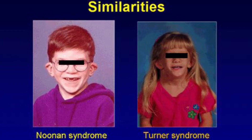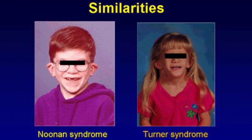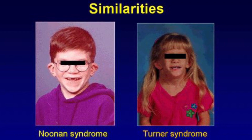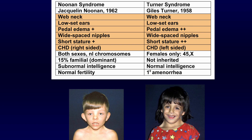There are phenotypical similarities between Noonan syndrome and Turner syndrome, and because of this we often confuse between both of them. Here is the comparison between Noonan syndrome and Turner syndrome — I recommend to stop the video here for 20 seconds. We can already see the similarities between both of these syndromes, such as webbed neck, low-set ears, pedal edema, widely spaced nipples, and short stature.